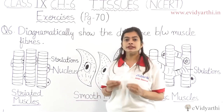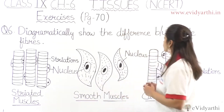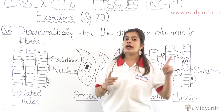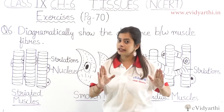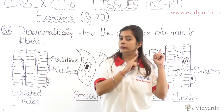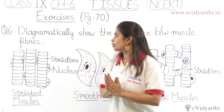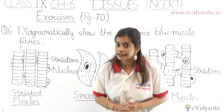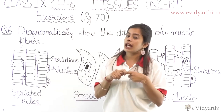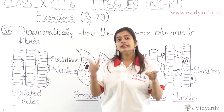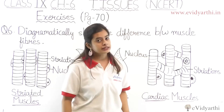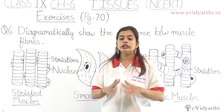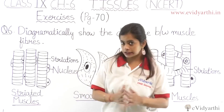Now what does the question say? Diagrammatically show the difference between the three muscle fibers. We know that we have three muscle fibers: striated muscles, non-striated which are the smooth muscles, and lastly the cardiac muscles. We will show them diagrammatically about their shape and structure.